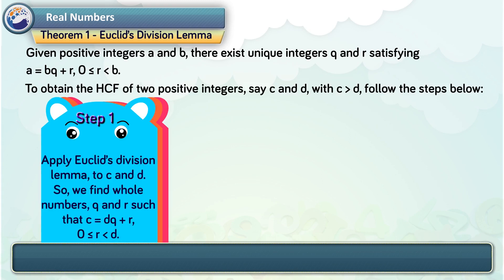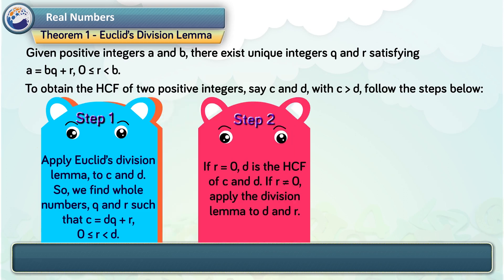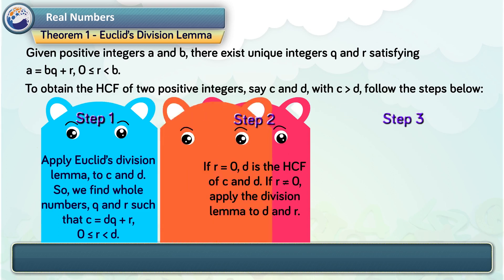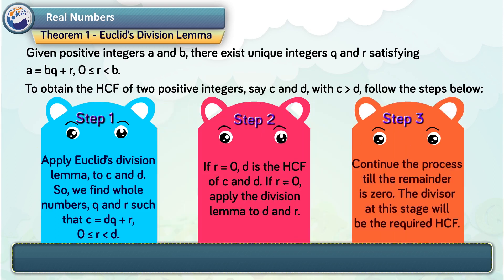Step 1. Apply Euclid's division lemma to C and D, so we find whole numbers Q and R such that C is equal to DQ plus R, 0 less than equal to R less than D. Step 2. If R is equal to 0, D is the HCF of C and D. If R is not equal to 0, apply the division lemma to D and R. Step 3. Continue the process till the remainder is 0. The divisor at this stage will be the required HCF.